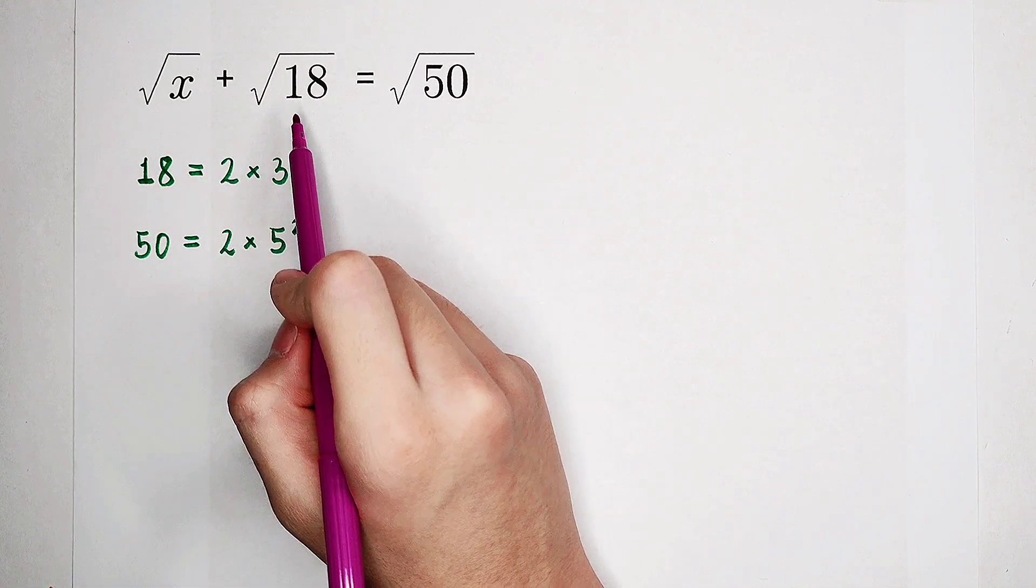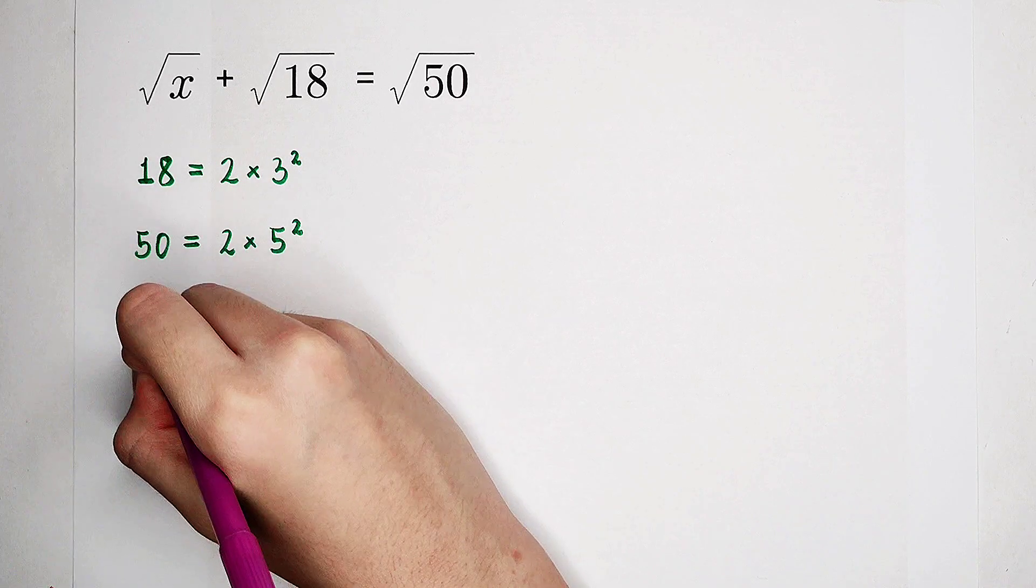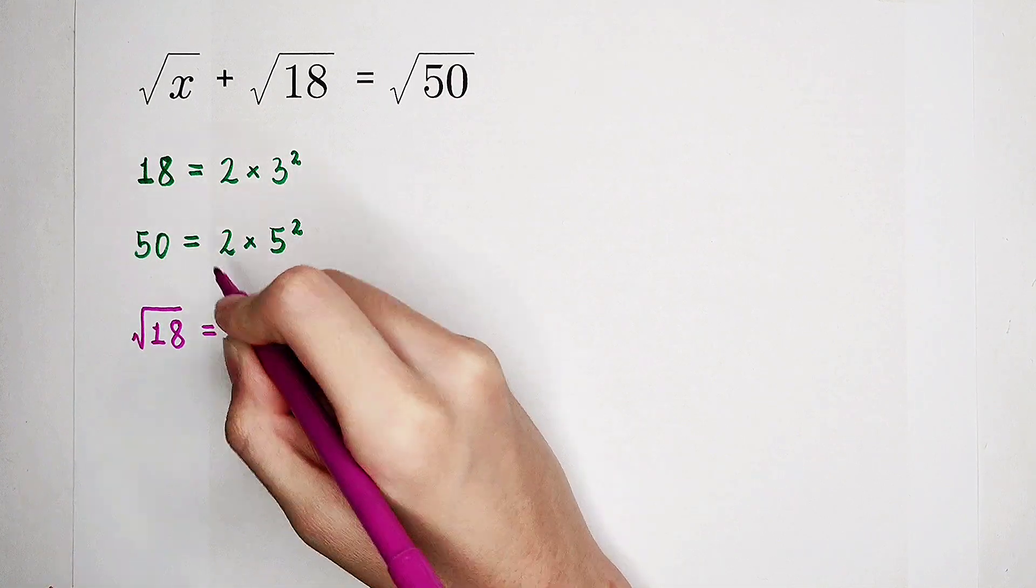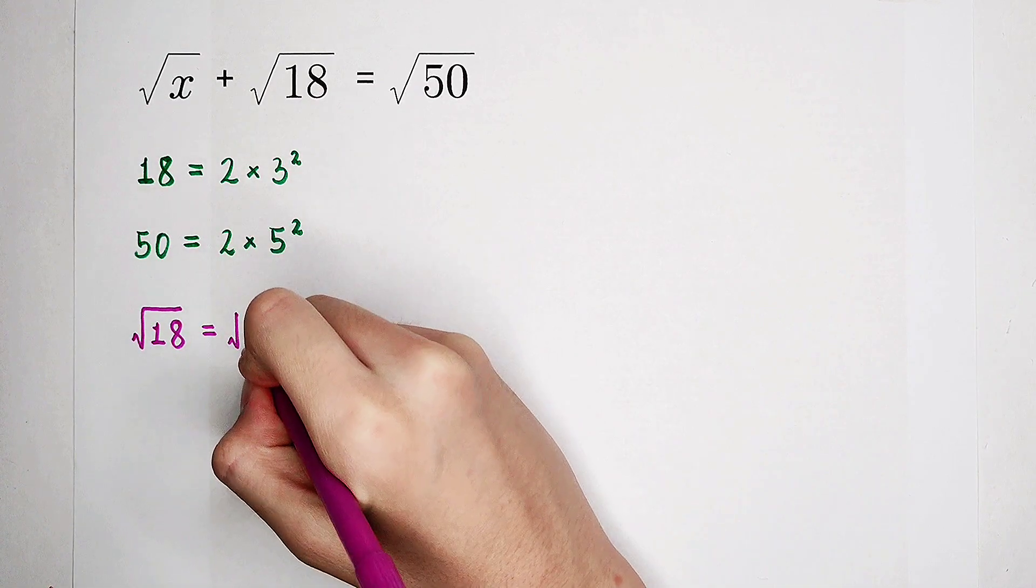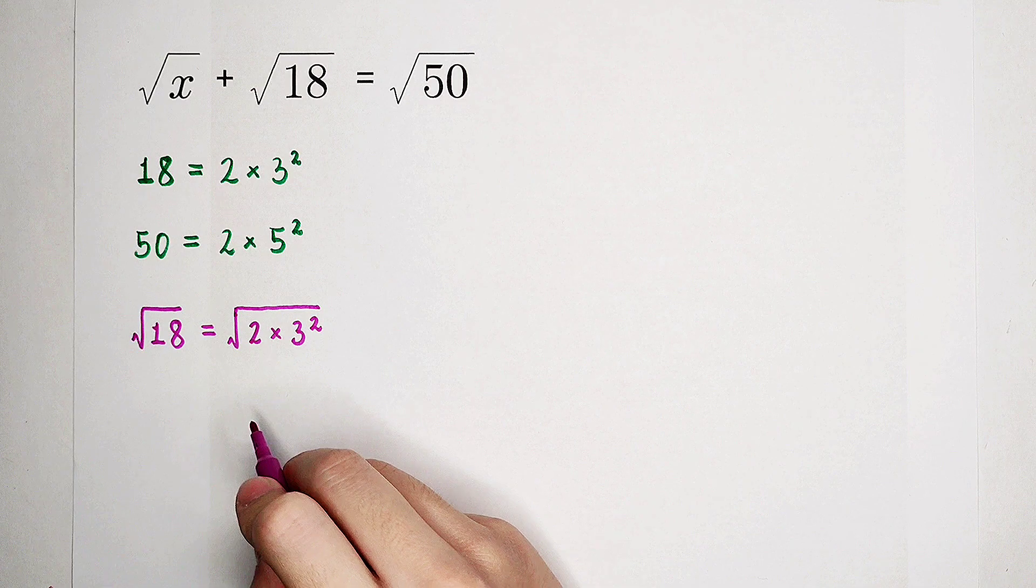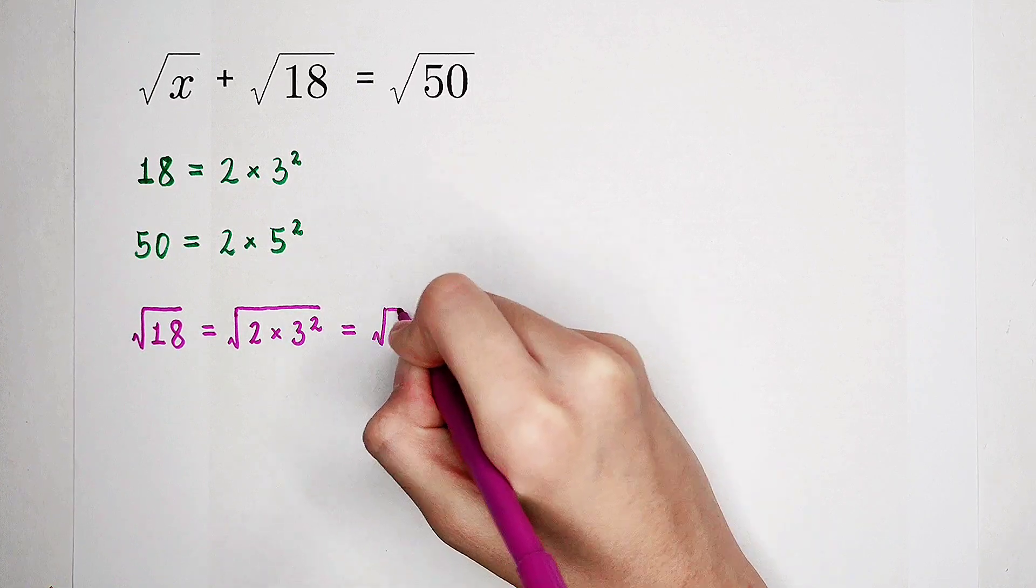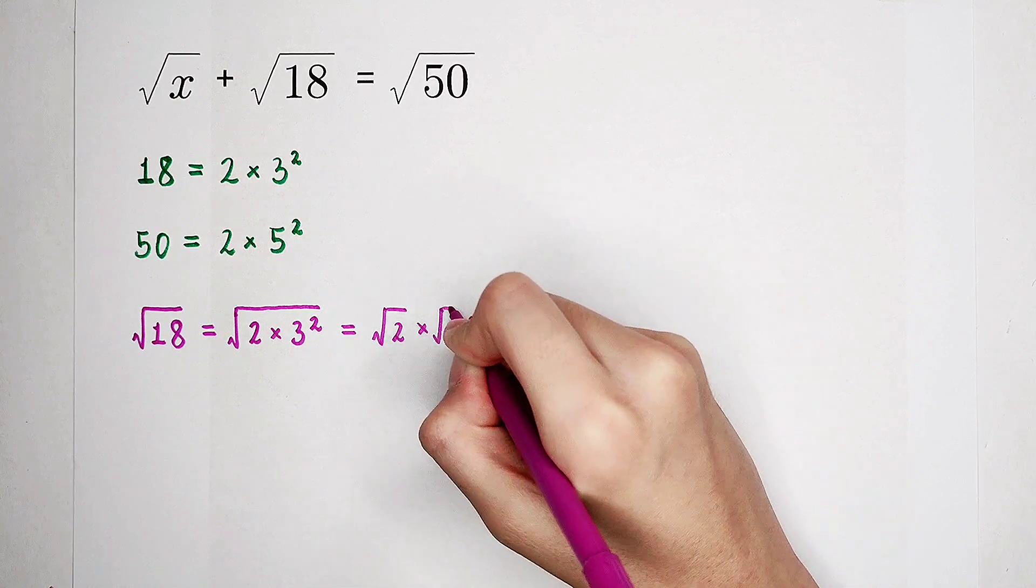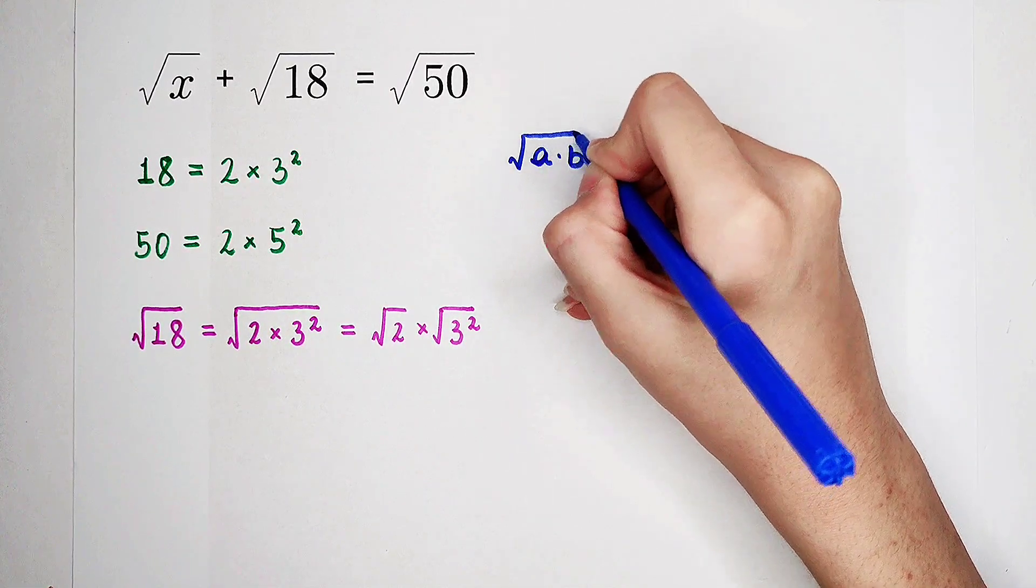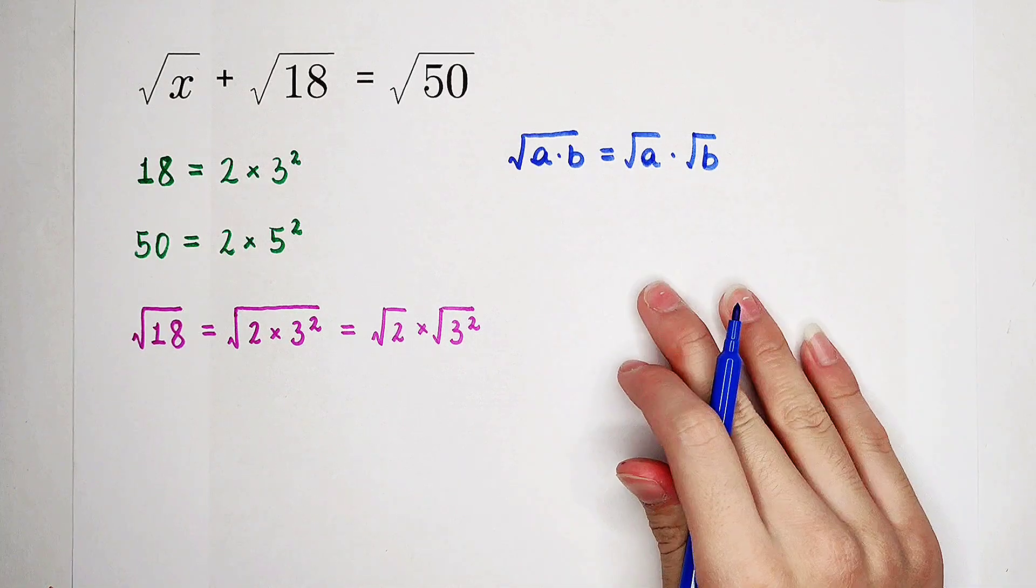Now, let's simplify this root 18. So it is equal to square root of 2, then times square root of 3 squared. I've used this formula. Square root of a times b is equal to square root of a, then times square root of b. Memorize it. It is very easy.